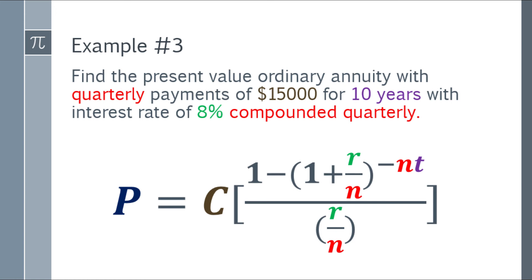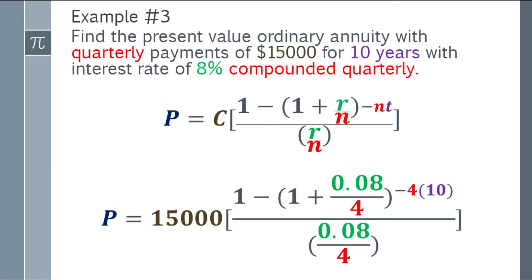After that, substitute. The present value ordinary annuity equals the cash flow which is $15,000 times the quantity. Numerator: 1 minus parentheses 1 plus 0.08 over 4, exponent negative 4 times 10. Denominator: 0.08 over 4.